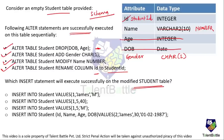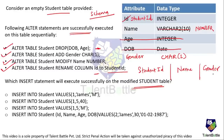The modified student table now has three attributes: student_id (integer), name (number data type), and gender (CHAR(1)). Checking insert statement 1: INSERT INTO student VALUES with student_id 1, name 'James', gender value. The name 'James' is a string but the data type is NUMBER, so this insert will not execute successfully.